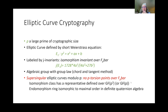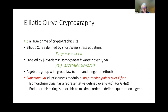The isomorphism class over F_P bar of any supersingular elliptic curve contains a representative defined over F_P or F_P². So in shorthand, when you hear that supersingular elliptic curves are defined over F_P or F_P bar, what it means is that every supersingular elliptic curve has a representative in its equivalence class defined over F_P or F_P². The endomorphism ring of a supersingular elliptic curve is actually isomorphic to a maximal order in a definite quaternion algebra — we'll talk about that more in subsequent lectures.